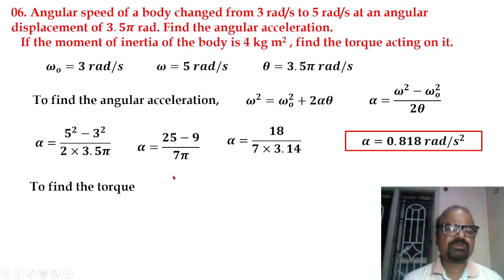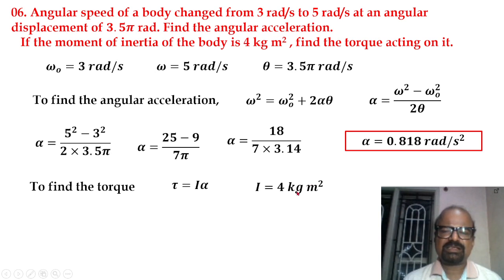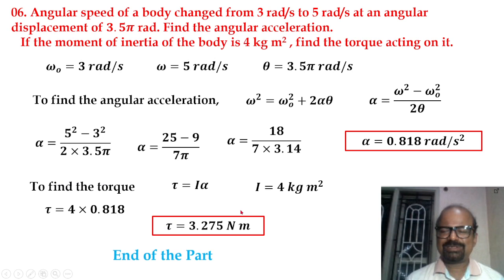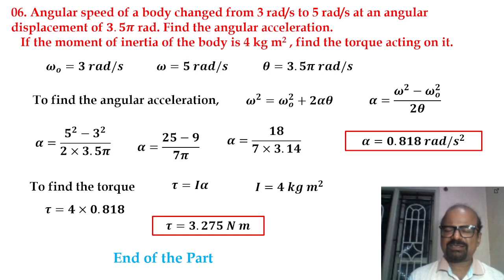Next, find the torque acting on the body given the moment of inertia is 4 kg·m². Torque equals I times alpha: 4 times 0.818 gives torque equal to 3.275 N·m. This concludes the problems on the system of particles and rotational motion. Thank you.